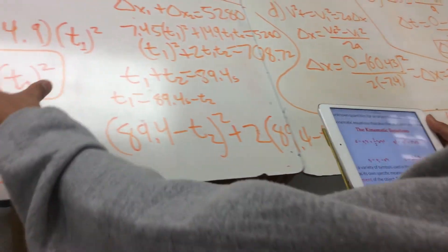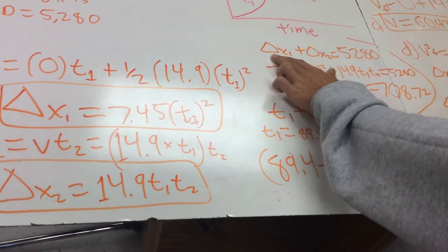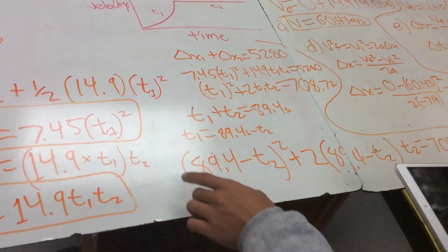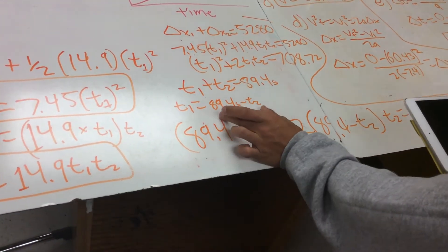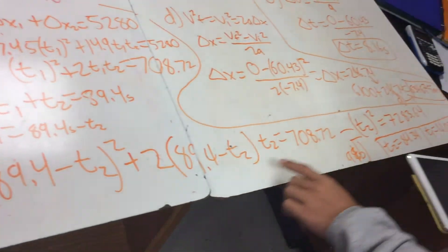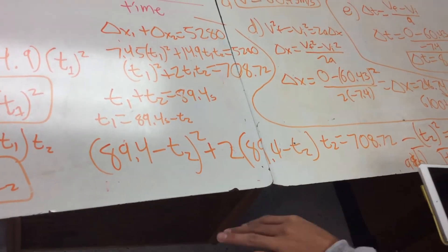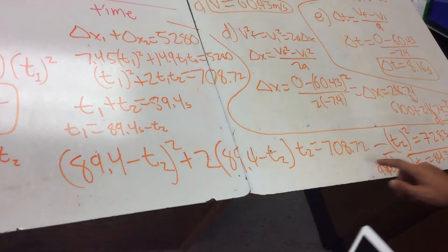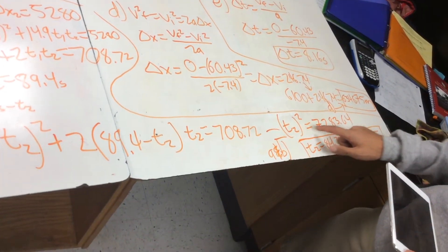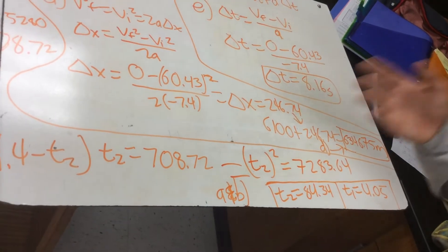Because, again, we know this equation, right? We plugged in this chunk for that, this chunk for that. And everywhere we saw t1, we plugged in this small chunk for t1. And you'll get this long equation. And it's a lot of work, but once you foil this out, and multiply this, and add them all together, a lot of things will cancel out. And eventually, you'll get t2 squared equals 7,283.64. And then you just take the square root of that.